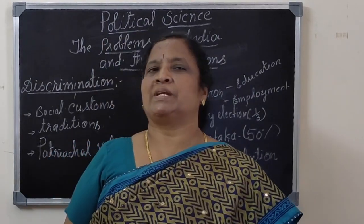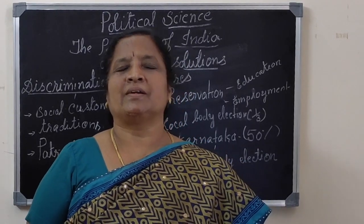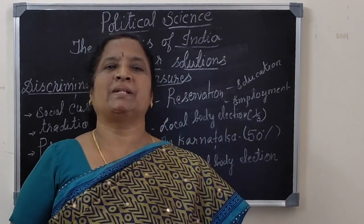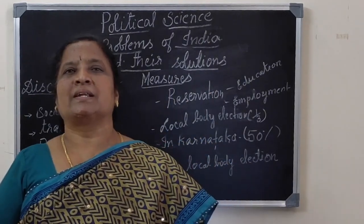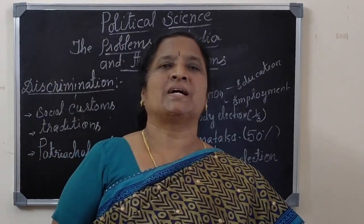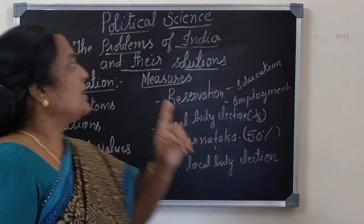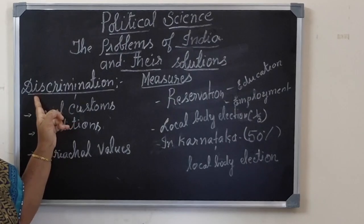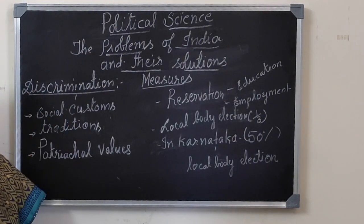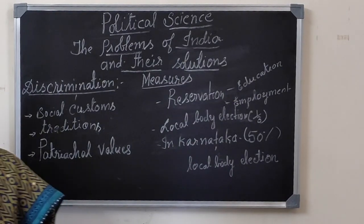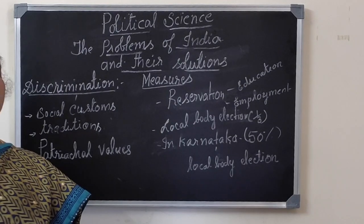What do you mean by discrimination? Unjust treatment of different categories of people on the basis of caste, religion, language, and sex. Now, there are different kinds of discriminations: discrimination on gender, discrimination on caste, and discrimination on religion.